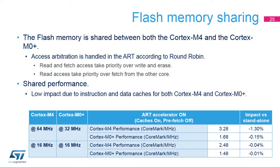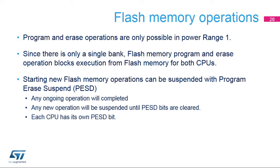This translates into a Cortex-M4 performance loss of only 1.3%. The Cortex-M4 CoreMark per MHz score is 2.48 at 16 MHz with Cortex-M0 Plus at 16 MHz, translating into a Cortex-M4 performance loss of only 0.04%. Flash memory program and erase operations are only possible in power range 1. In range 2 and low power modes, flash memory program and erase operations are prohibited. Due to the single bank flash memory architecture, program and erase operations will block execution for both CPUs. To prevent flash memory operations from impacting real-time CPU performance, they can be suspended.